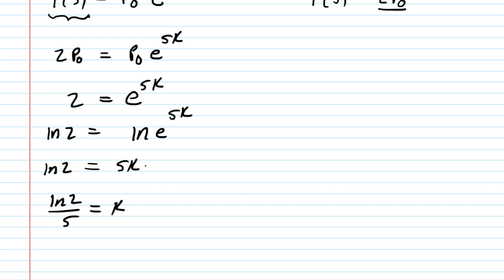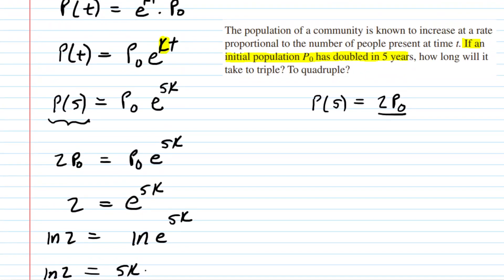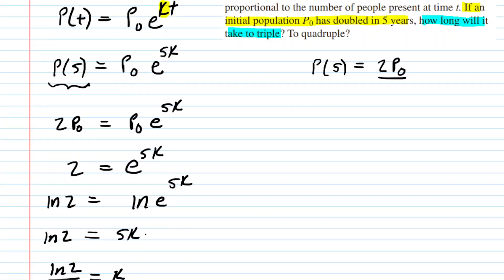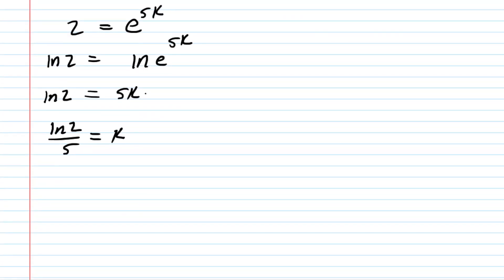Good, but we still haven't answered the question, so let's go back and check it out. The question really wants us to figure out how long it takes to triple the population. Now tripling the population, of course, means that your P(t) is going to equal three times the initial population. We don't know the value of t, that's what we're going to look for, but tripling the population means that P(t) is equal to three times P0.